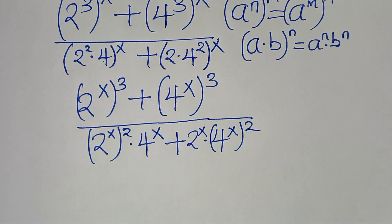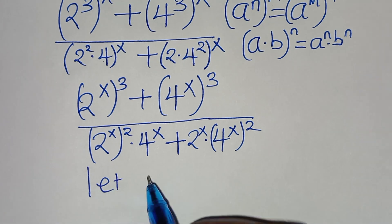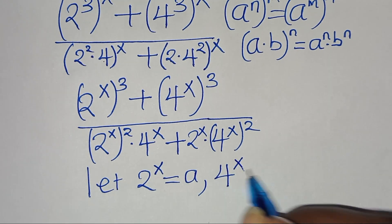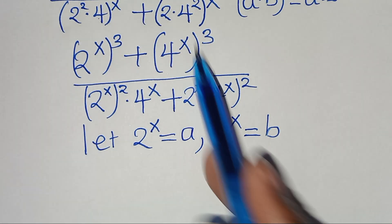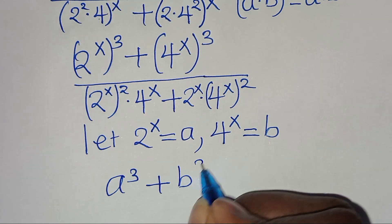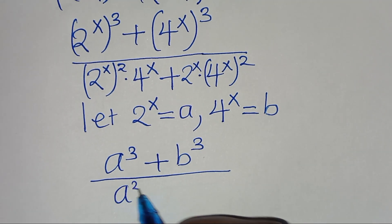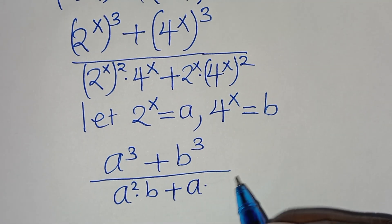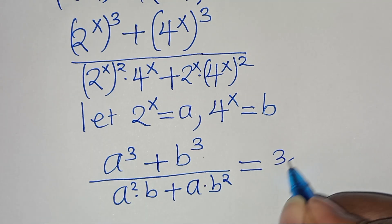The next step is that we have 2 to the power of x and 4 to the power of x, so we can let 2 to the power of x be equal to a, and we can let 4 to the power of x be equal to b. Substituting this, we have in the numerator a to the power of 3 plus b to the power of 3, divided by a squared multiplied by b, plus a multiplied by b to the power of 2. This is equal to 3 over 2.